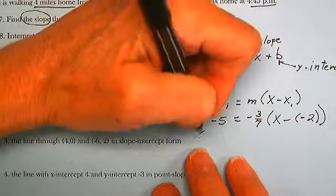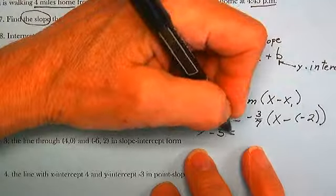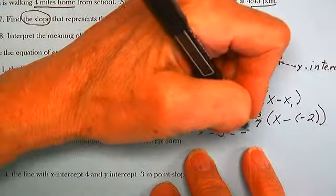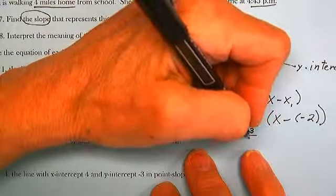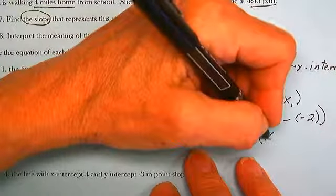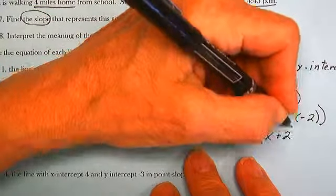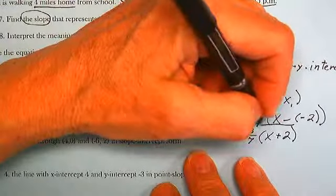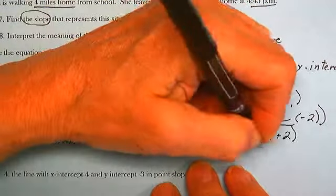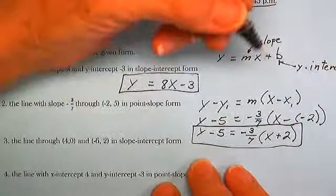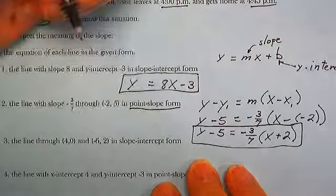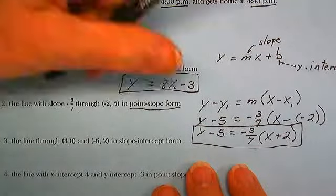So, y minus 5 is equal to minus 3 over 7 times x plus 2. We can certainly take it further. The fractions get ugly, but we were asked for point-slope form, so we are done.